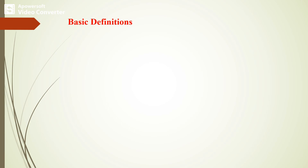The first basic definition is error. Error is synonymous with mistake — the mistakes humans make while coding. These errors can also be called bugs. Errors always tend to propagate, so that is the basic definition: an error is a mistake made by a human while coding.